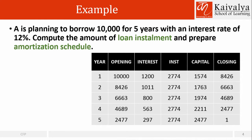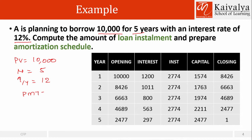A is planning to borrow 10,000. So this is the loan amount; the period is 5 years with an interest rate of 12%. Compute the amount of loan installment and prepare the amortization schedule. So if we are using a financial calculator — Casio is also okay — we can say PV equals 10,000, N equals 5, rate equals 12, and simply find out PMT. The answer would be 2,774.